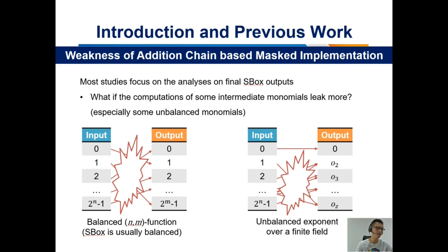Most studies focus on the analysis of the final S-Box outputs. However, the addition chain implementations induce lots of extra computations for monomials. In particular, nearly half of the monomials over the finite field are not balanced. A function is said to be balanced if every output element admits the same number of pre-images. So a natural question is: what if the computations of some intermediate monomials leak more than the S-Box outputs, especially some unbalanced monomials?